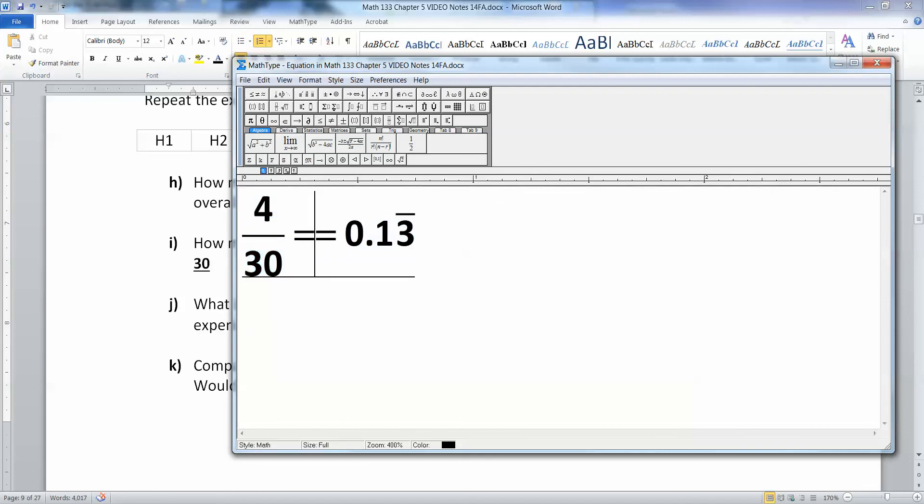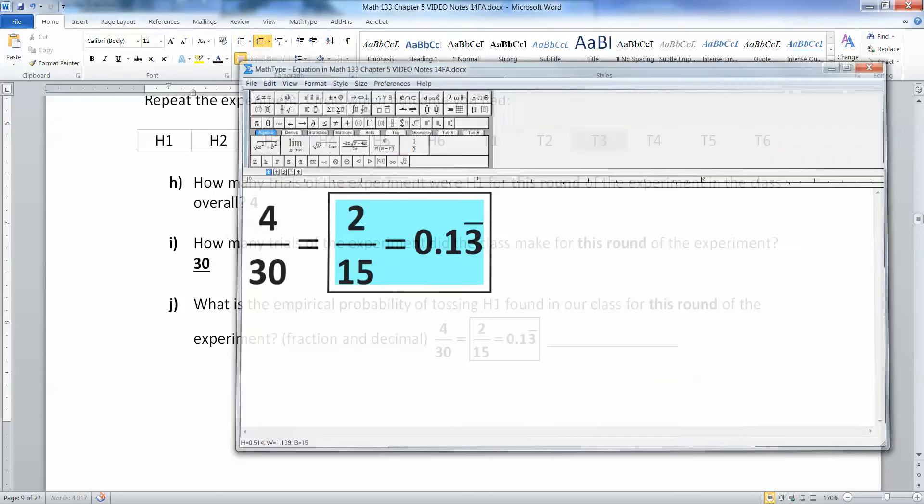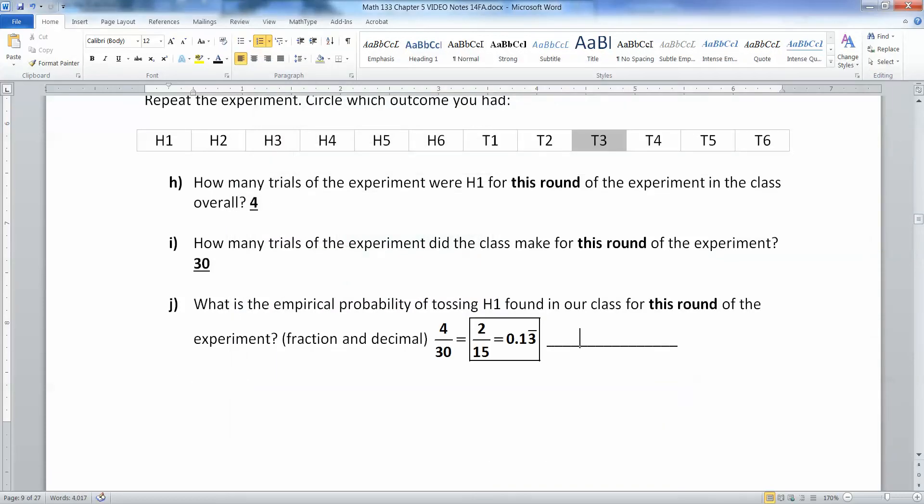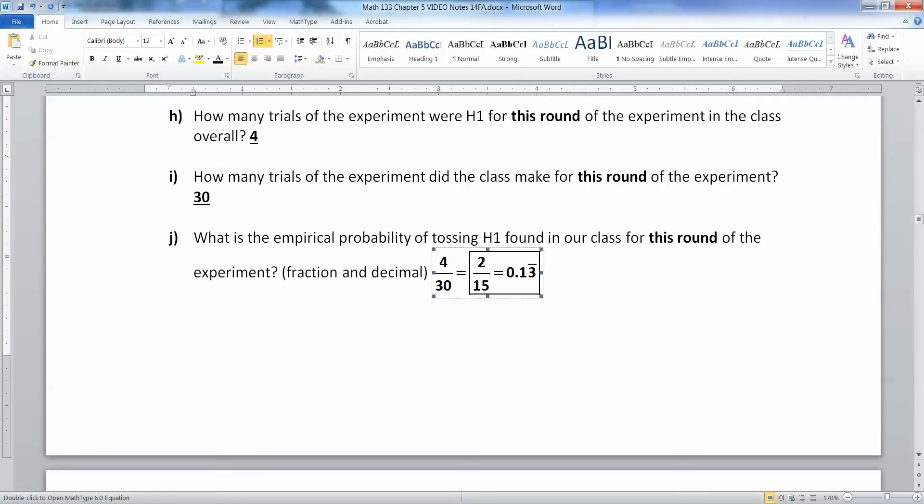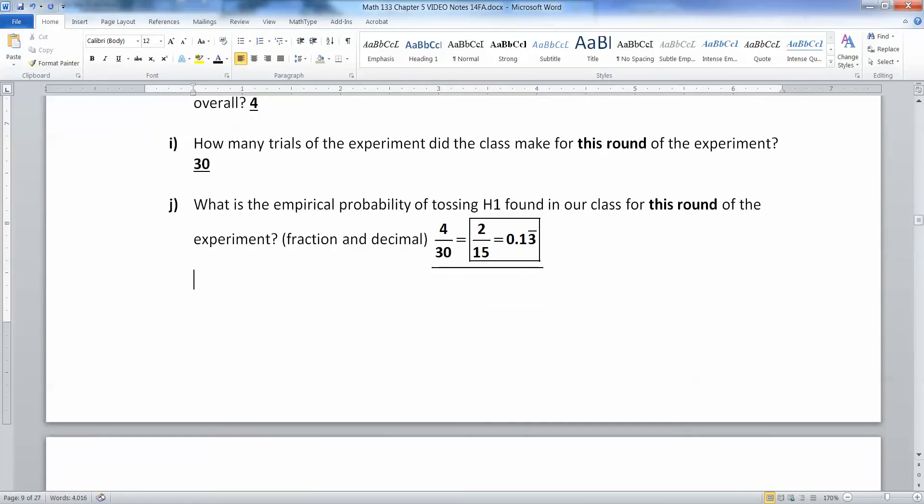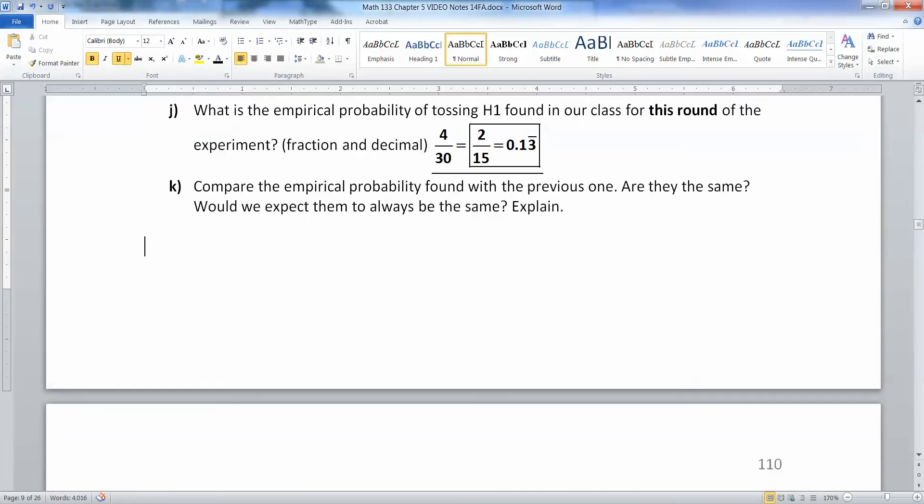And if you wanted a reduced fraction just for the sake of it, 2 goes into 4 2 times. 2 goes into 30 15 times. So not that I asked for a reduced fraction, but if you wanted one, there you've got it.